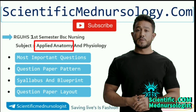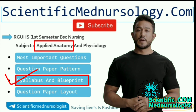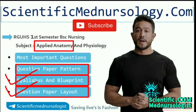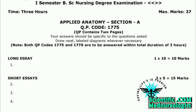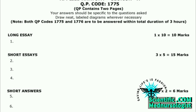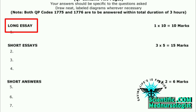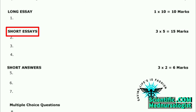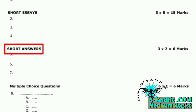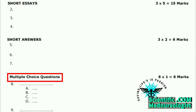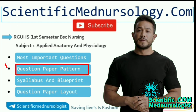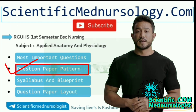This is all about the Applied Anatomy subject covering: syllabus and blueprint, question paper layout, and question paper pattern. Your degree examination question paper will look like this: the first part is the long essay part carrying 10 marks, the second part is the short essay part carrying 15 marks, the third part is short answers carrying 6 marks, and the fourth part is multiple choice questions carrying 6 marks. To download this question paper pattern, click the link in the description.